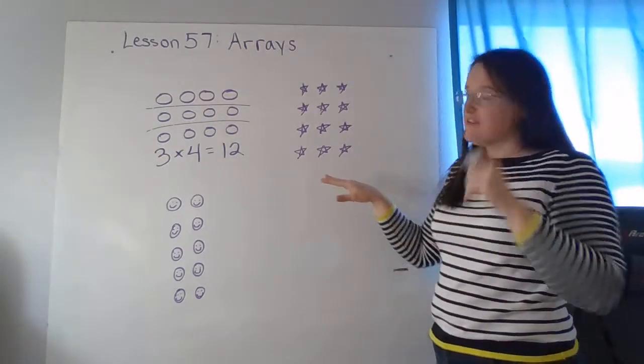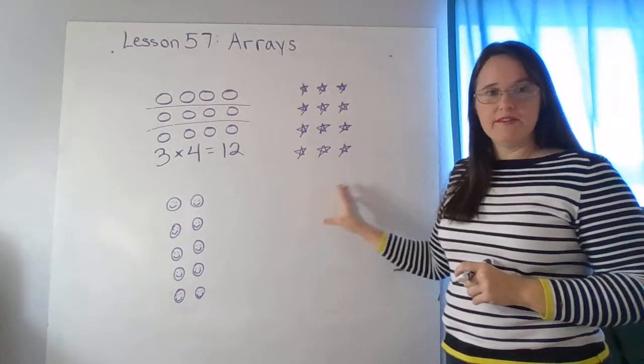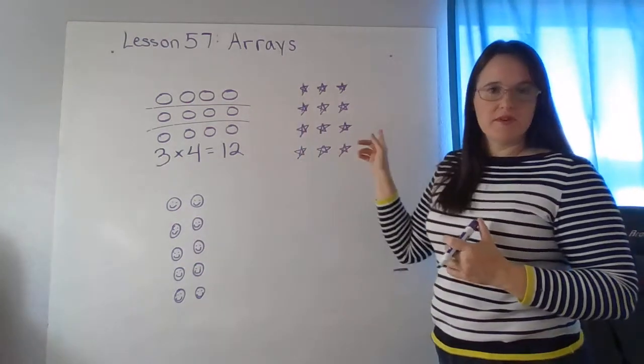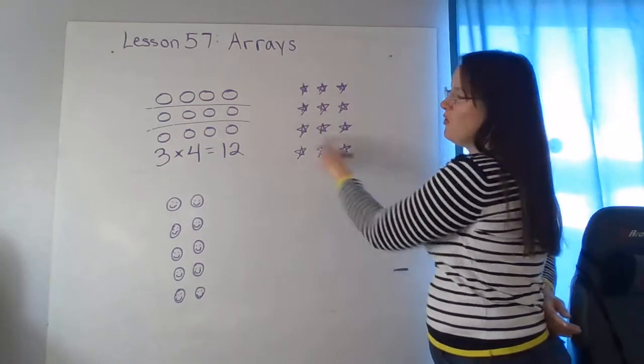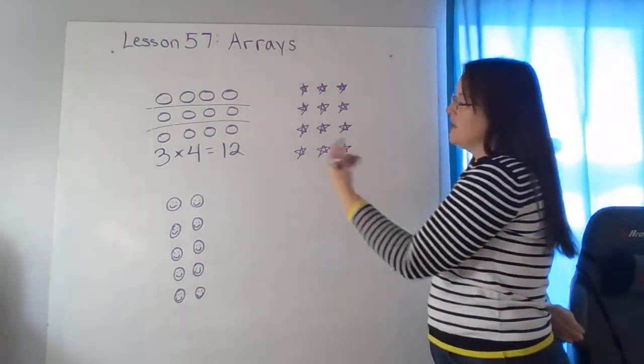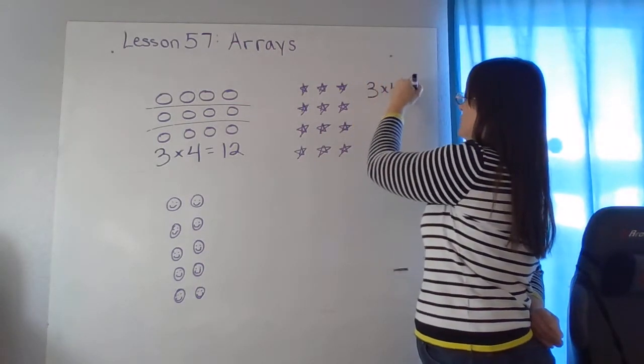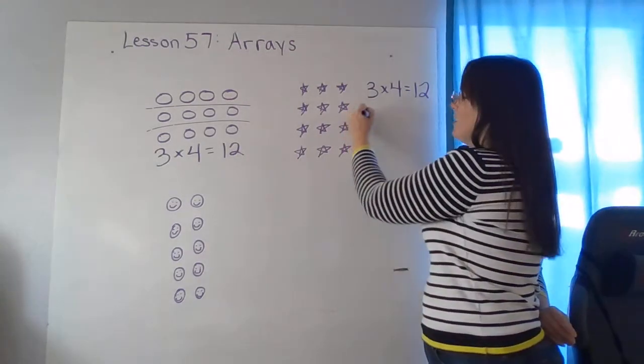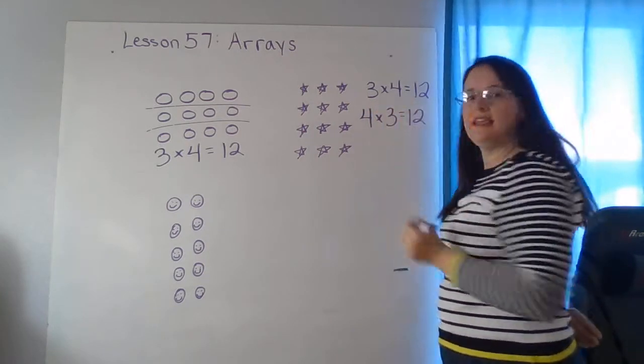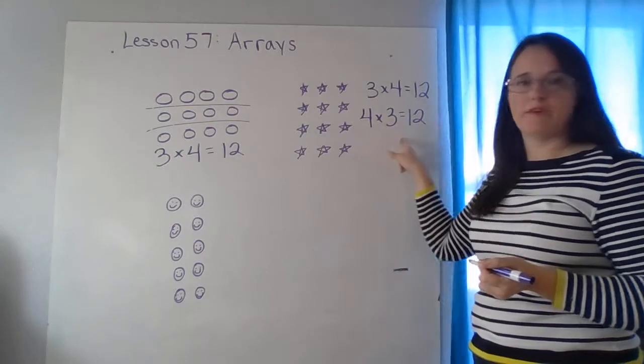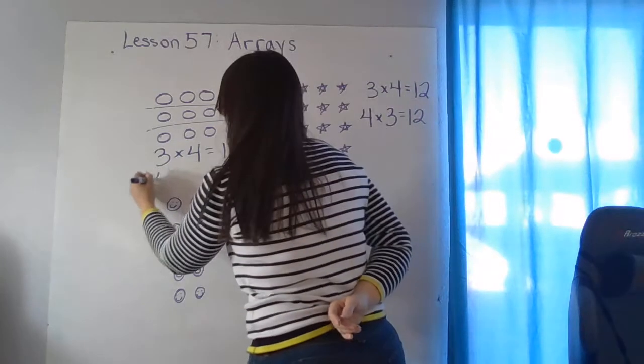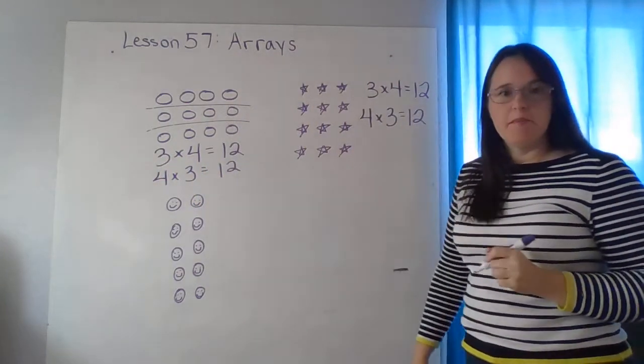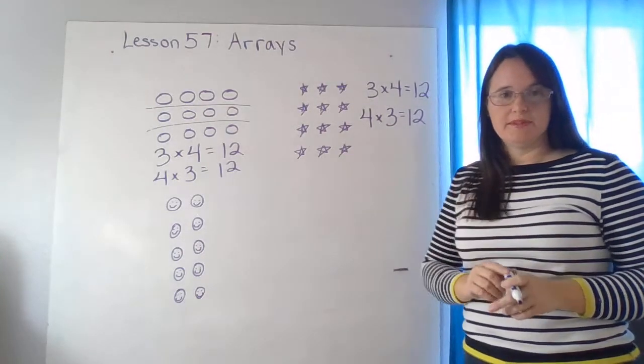Here I did something very similar. I've still got twelve items here. I have twelve stars, but I changed how I oriented it. Instead of having three rows of four, now I have four rows of three. So I could write this three times four equals twelve. Does this show three groups of four? Absolutely. Or I could flip it around and write it four times three equals twelve, because it also shows four groups of three. And I can do the same thing over here. So these two pictures both are arrays that show the same two multiplication facts.